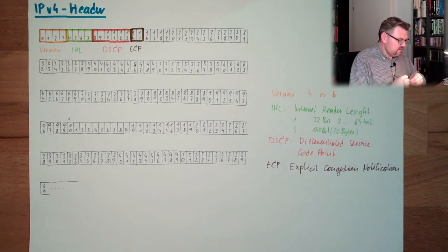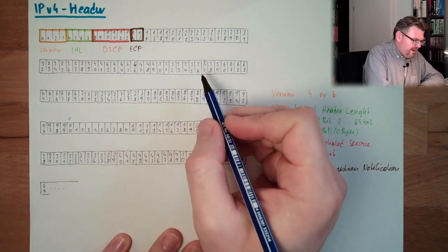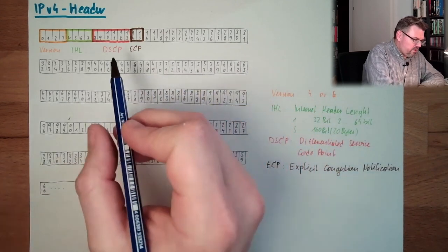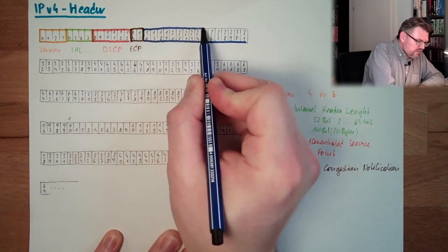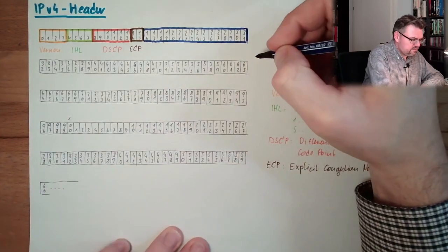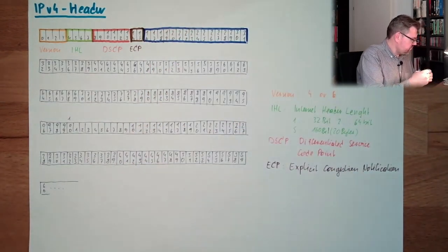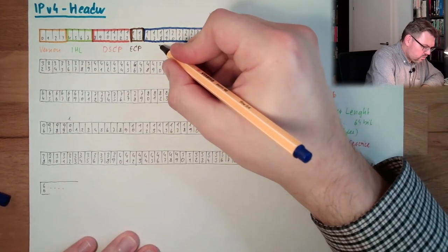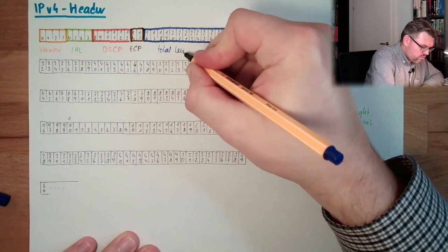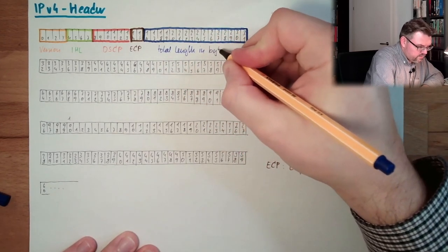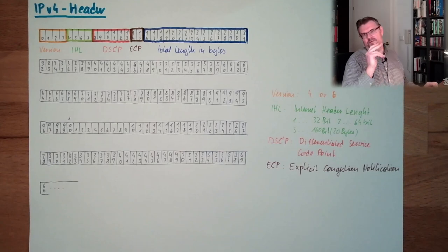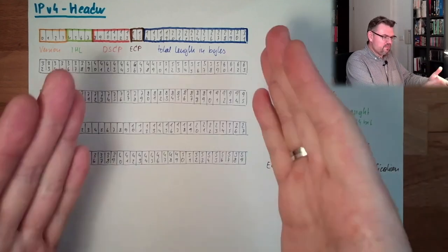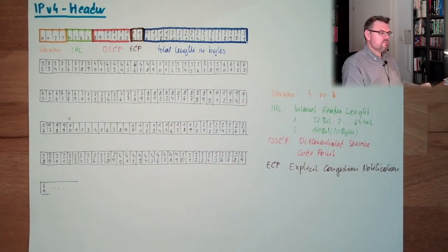The next part here, up to 16 to 31, the full 16 bits, this is the total length in bytes. The maximum length of bytes is 65,535. That's the maximum length of an IP packet in bytes.